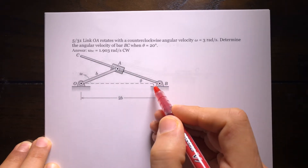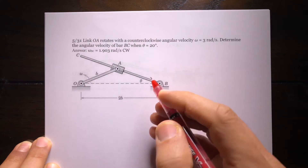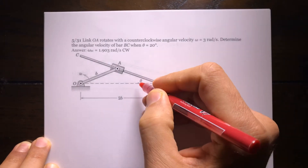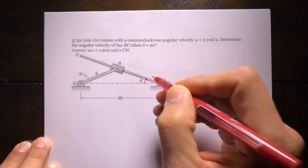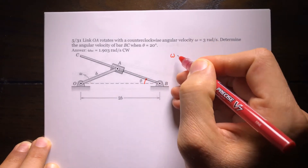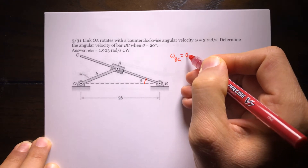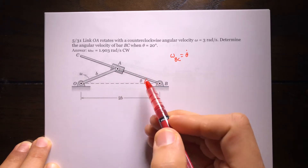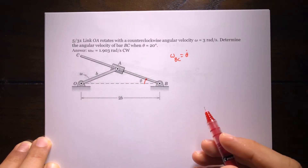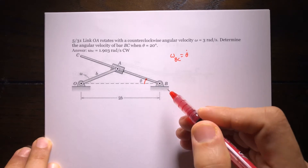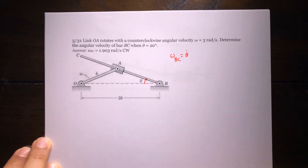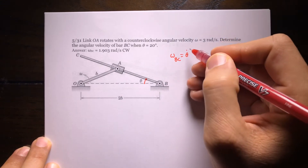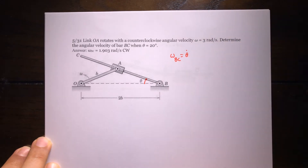The question asks: what is the angular velocity of BC? BC is rotating. If I call this angle theta, then the angular velocity of BC is theta-dot. So if I find theta-dot, that gives me the angular velocity of BC. I'd suggest spending at least 10 to 15 minutes on this one — it's not easy, so please pause this video and come back.